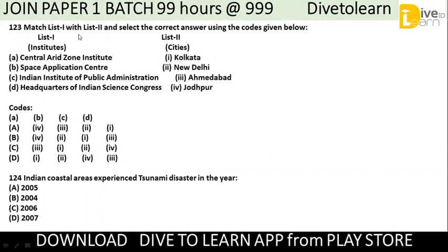Question 123: Match List 1 with List 2 and select the correct answers using the codes given below. List 1 contains institutions: Central Arid Zone Institution, Space Application Center, Indian Institute of Public Administration, and Headquarters of Indian Science Congress. List 2 contains cities: Kolkata, New Delhi, Ahmedabad, and Jodhpur.